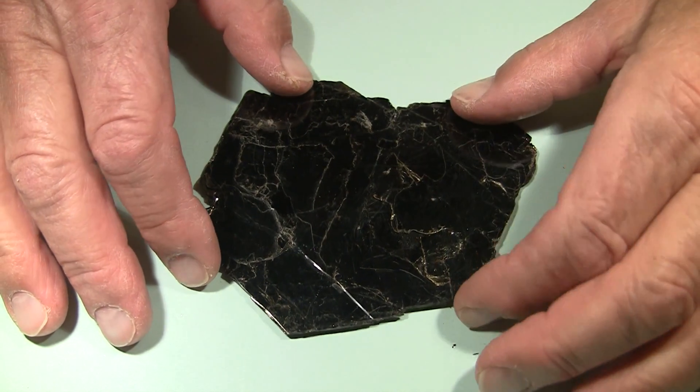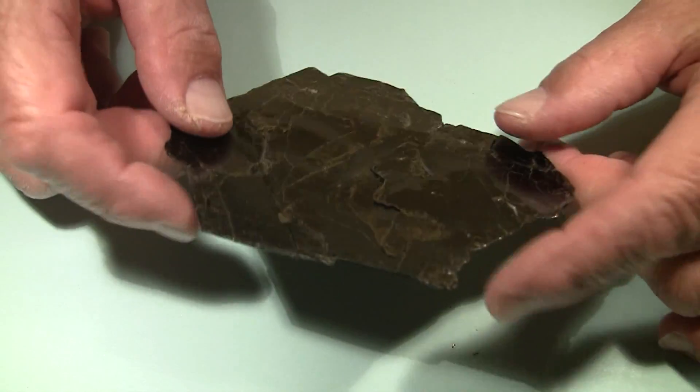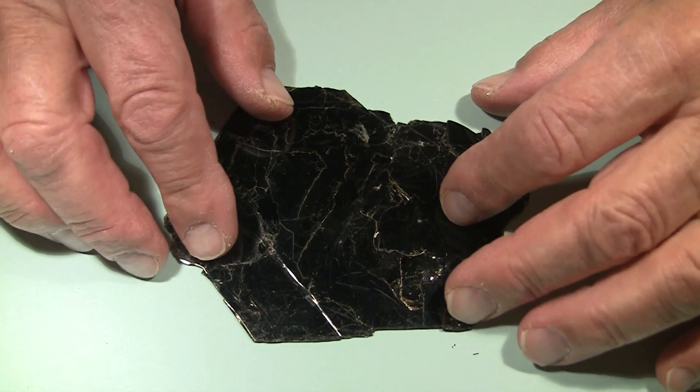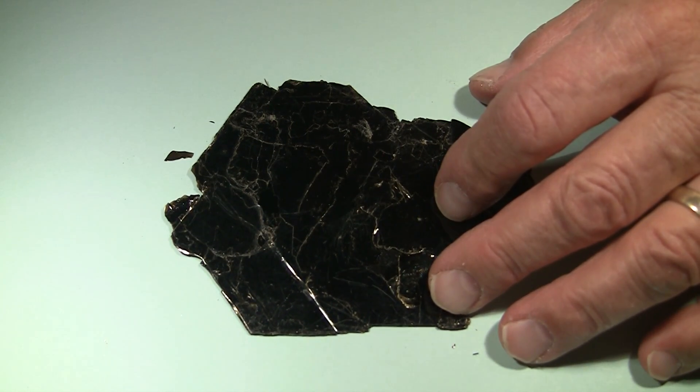This is a sheet of biotite mica. This is a nice thin cleavage fragment. What I'm going to do here is test the hardness of it as well. The mica has a nice flat surface here. So let's test it with the glass.